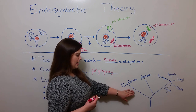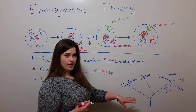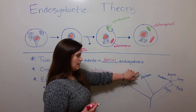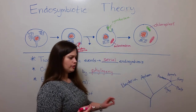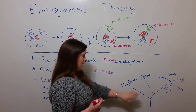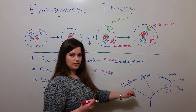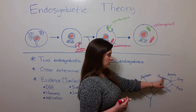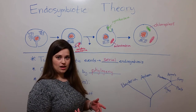Here we have a simplified phylogenetic tree that shows all of life. We have the three domains: bacteria, archaea, and eukarya, which I've shown in some more detail over here. Both the aerobic bacterium and the cyanobacterium came from somewhere along this bacteria lineage, but were engulfed by ancestors leading to today's eukaryotic cells.